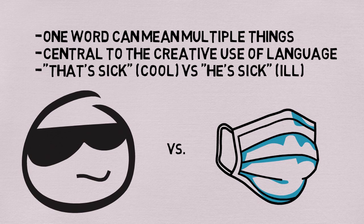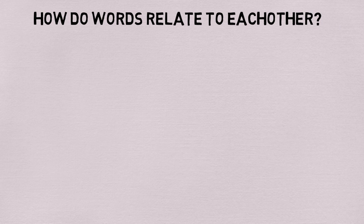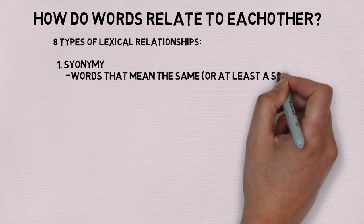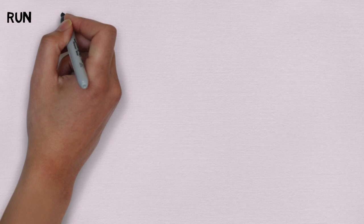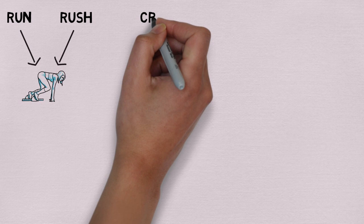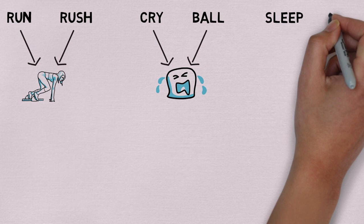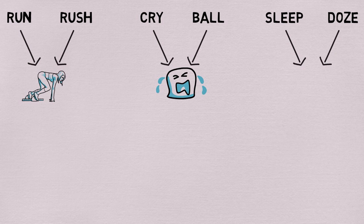The first of the lexical semantic relations we'll be covering is synonymy. Synonymy is when two words have the same or at least similar meaning. Synonymy is rarely exact — words almost always have some difference, but their meanings can be very close. Words like 'run' and 'rush,' 'cry' and 'bawl,' or 'sleep' and 'doze' are all synonyms because they more or less impart the same meaning.